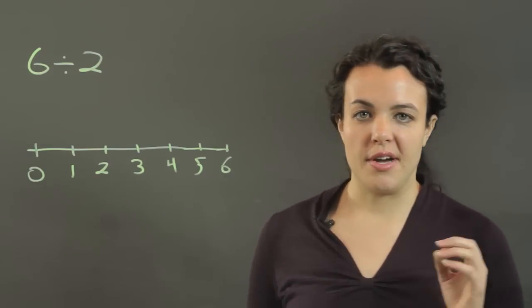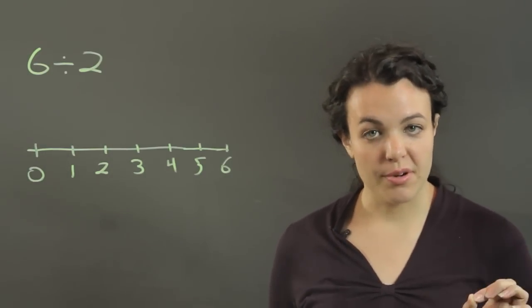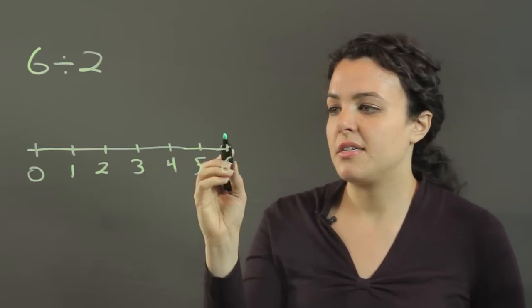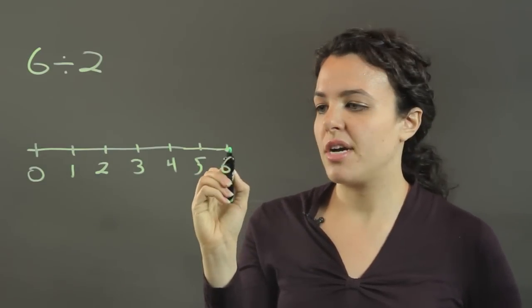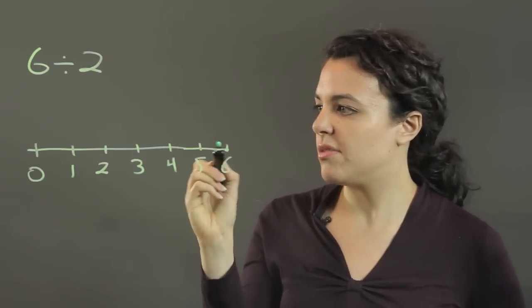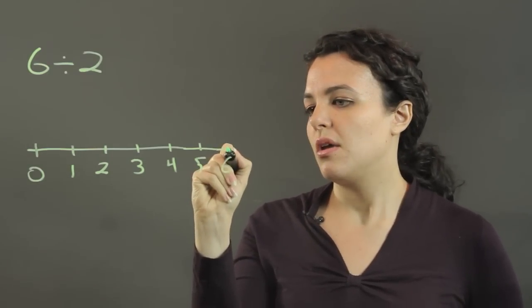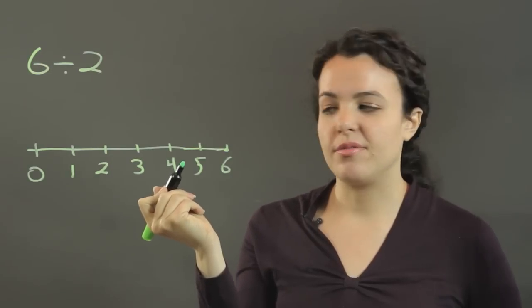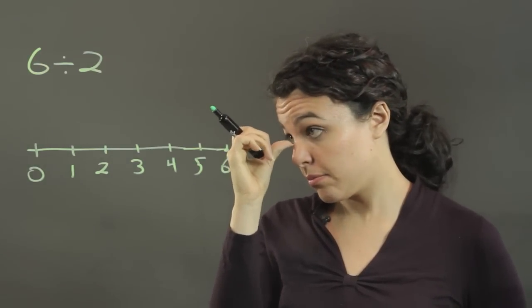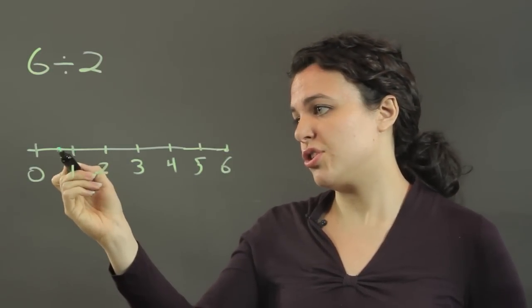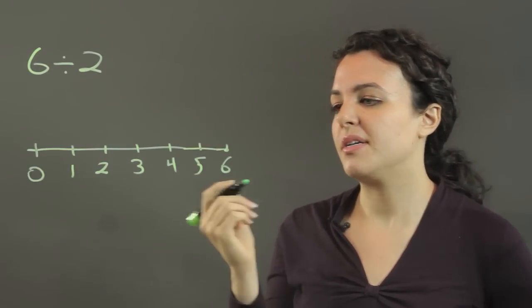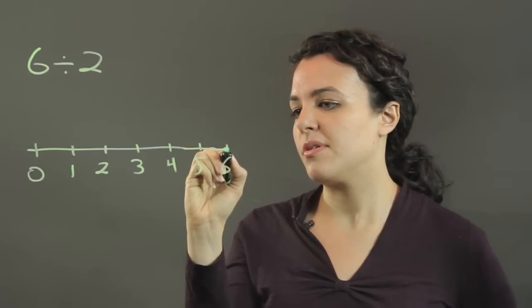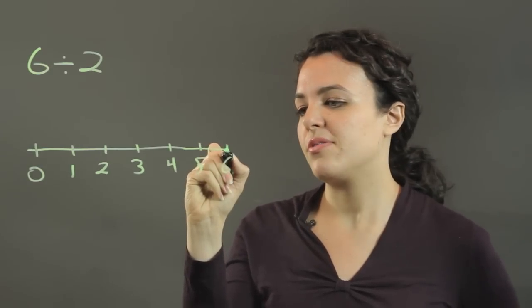So if we're going to divide 6 by 2 on the number line, we start at 6 and we just repeatedly subtract 2 until we reach 0. If we have a remainder then we would stop just short of 0 before we completed our final 2. But I picked a nice number so we won't have any remainders.